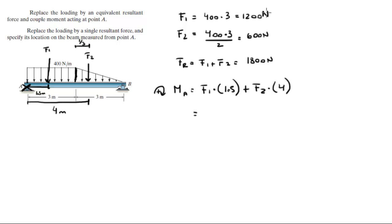When you plug in F1 and F2 which we already found into the above formula you get that this is equal to 4200 newton meters. That's the moment created about A going clockwise because it's positive and we assumed clockwise is positive.